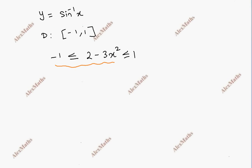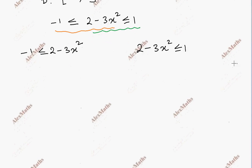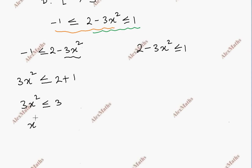We split this into two parts. Part 1: minus 1 less than or equal to 2 minus 3x squared. Part 2: 2 minus 3x squared less than or equal to 1. For part 2, minus 3x squared is less than or equal to 1 minus 2, so minus 3x squared is less than or equal to minus 1.